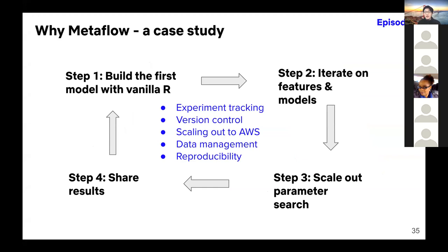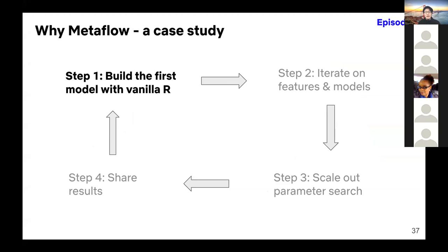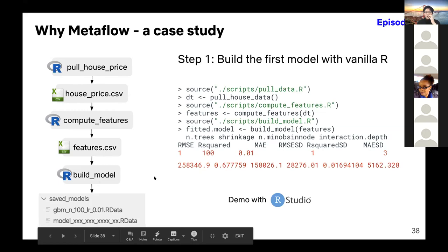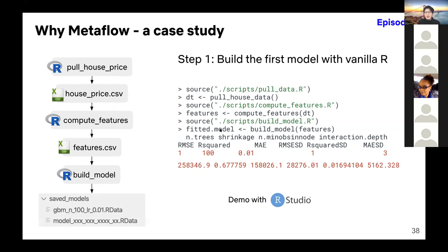Metaflow focuses on the lower levels so that data scientists can move very quickly on model development and feature engineering. Let's start with step one — building the first model with vanilla R. R is really great at data wrangling and experimentation. We have three scripts: one function creates house_price.csv with some data cleaning from the raw data, then we compute features, and based on the features we build models and save the model locally.